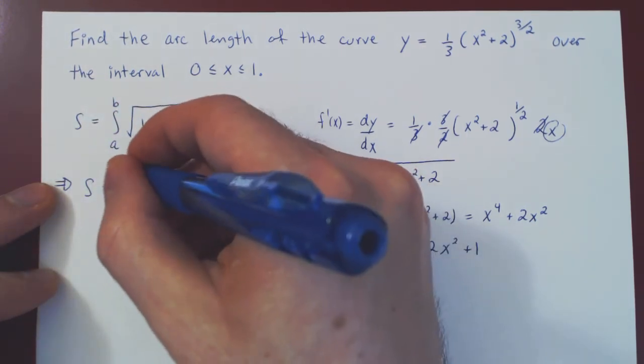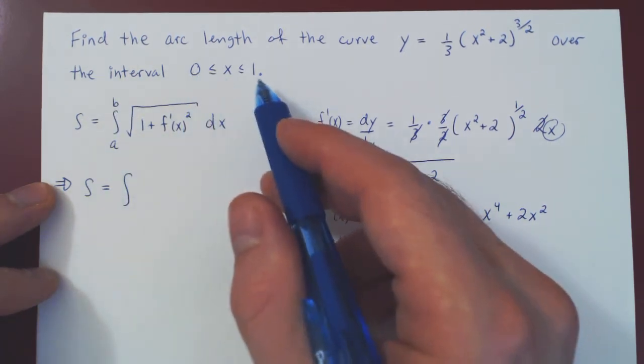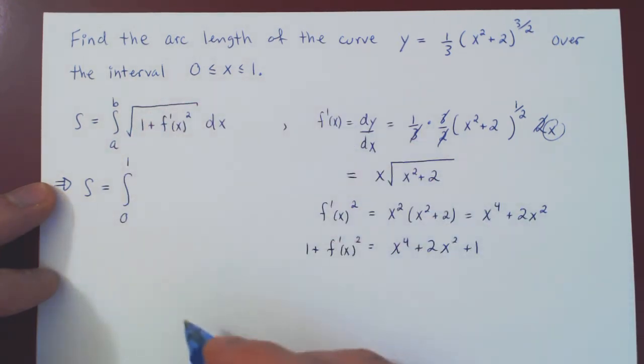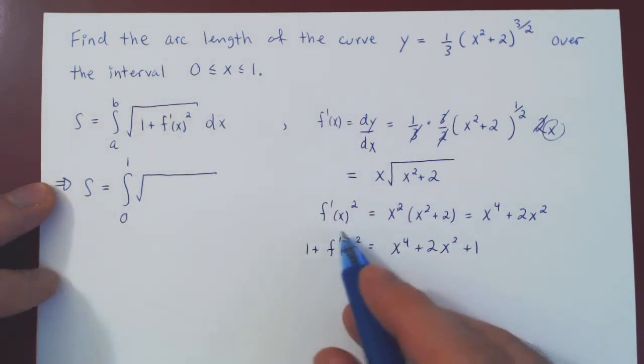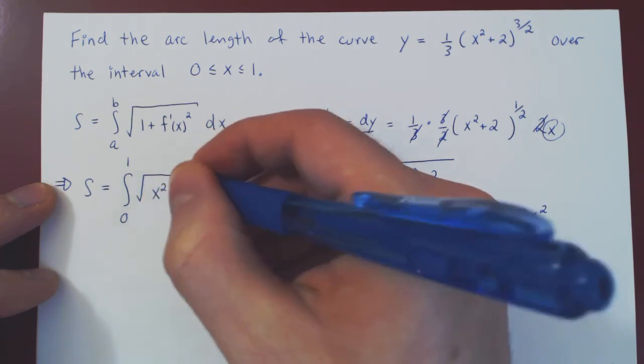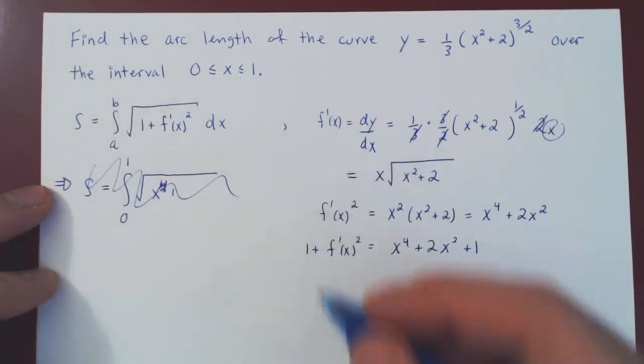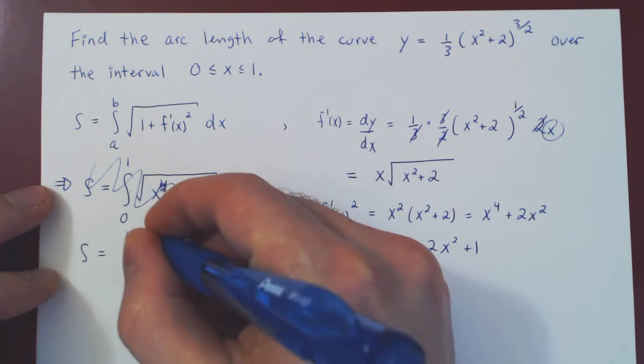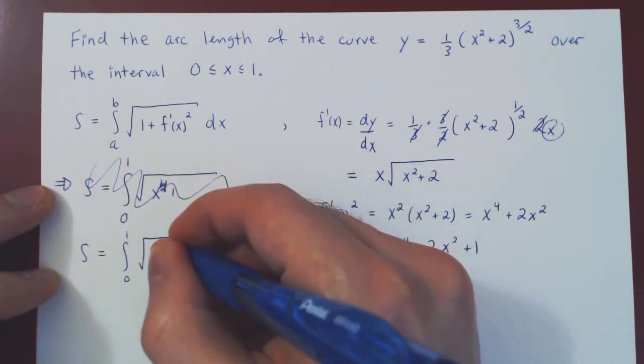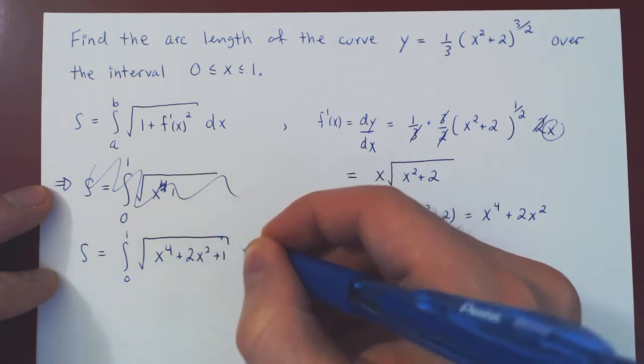So our arc length would be the integral. A and b are the end points of our interval. So the interval here goes from 0 to 1. So a equals 0, b equals 1. Square root of 1 plus our derivative squared, which is x to the 4 plus 2x squared plus 1, dx.